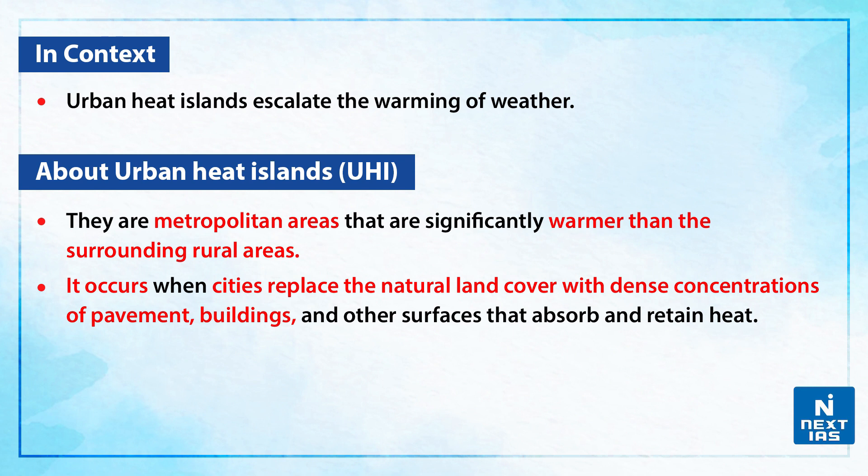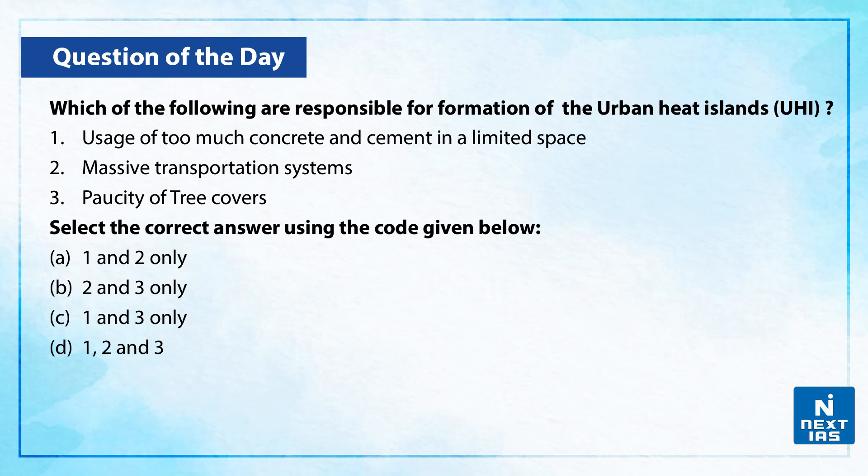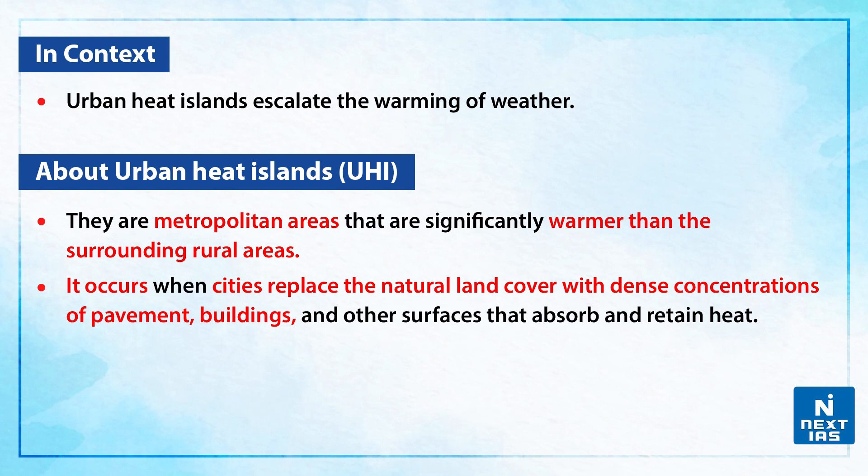Urban heat islands are the metropolitan areas that are significantly warmer than the surrounding rural areas. It occurs when cities replace natural land cover with dense concentrations of pavement, buildings and other surfaces that absorb and retain the heat.